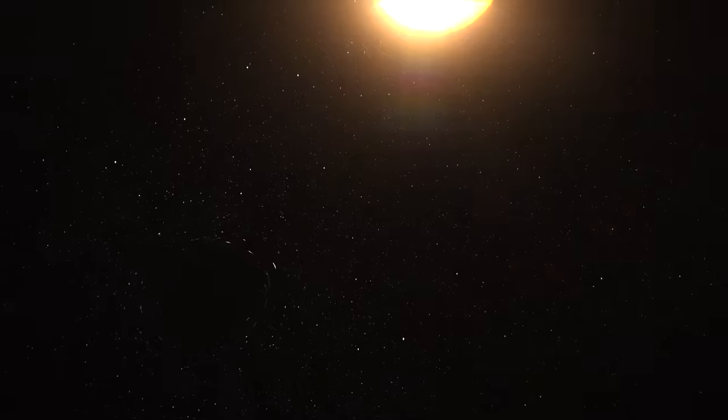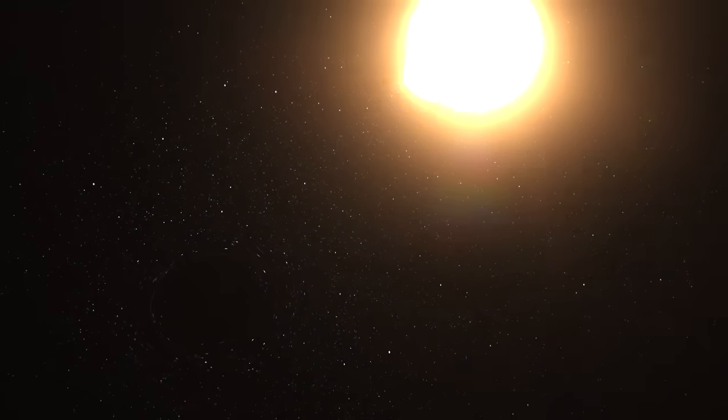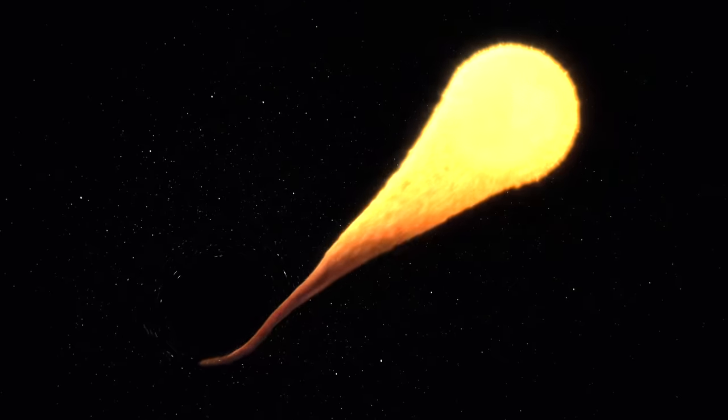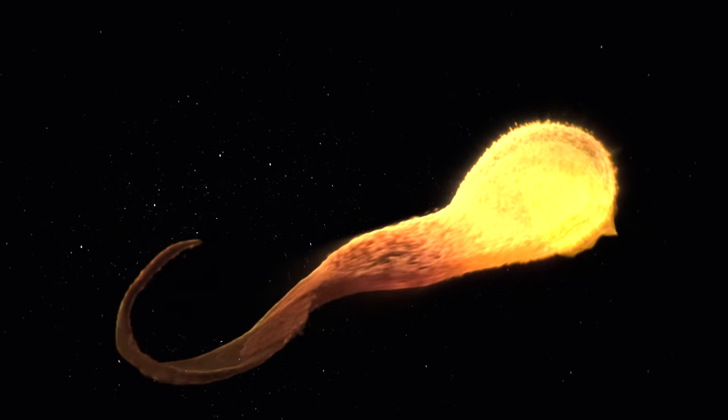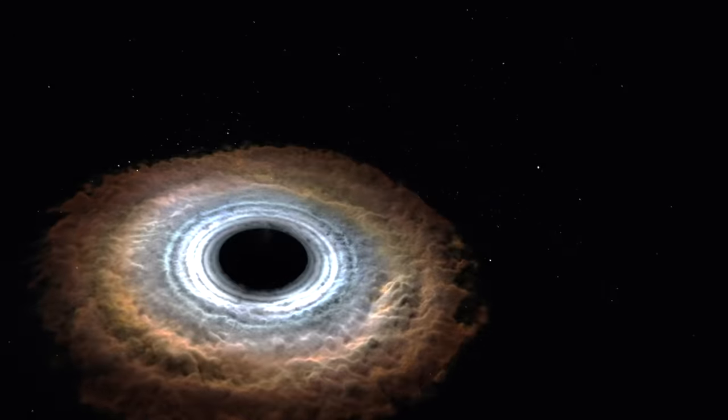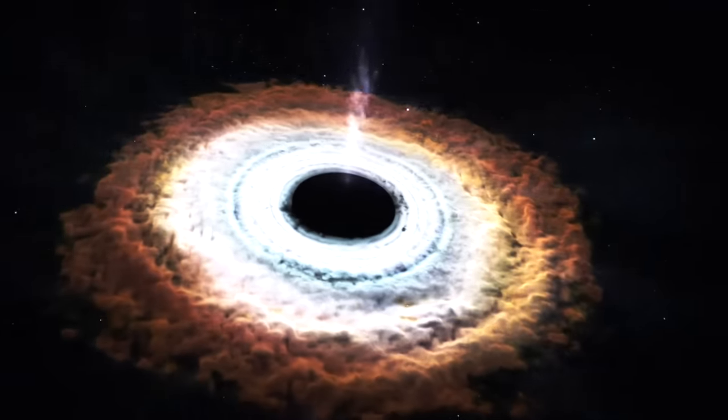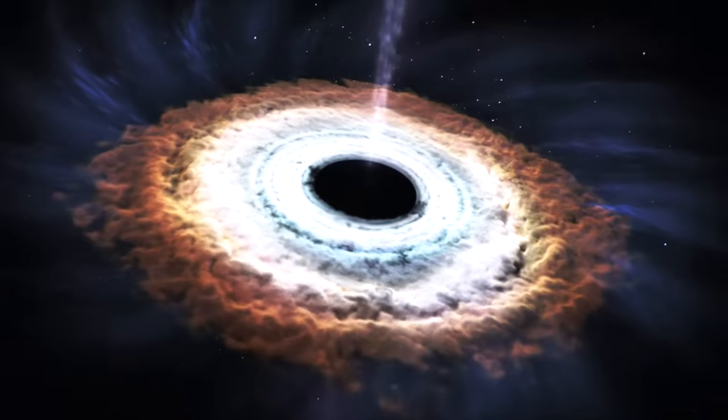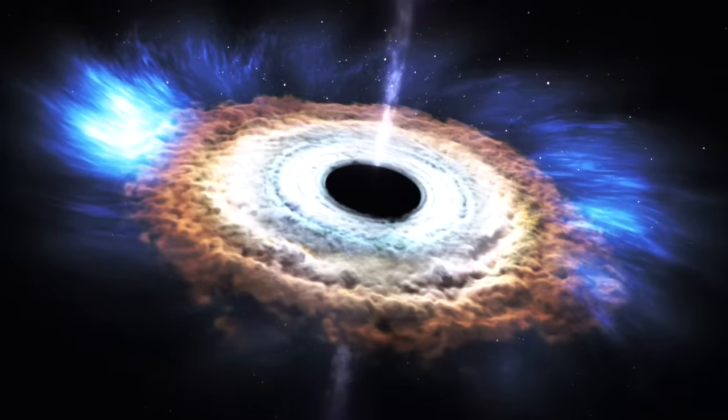As the star approached, the side closest to the black hole experienced a much stronger gravitational pull than the other side, ripping the star to shreds. Matter spiraling into the black hole formed an accretion disk, an annular ring of gas and dust that's accelerating and heating up, emitting visible light, UV, and x-rays observable from Earth.